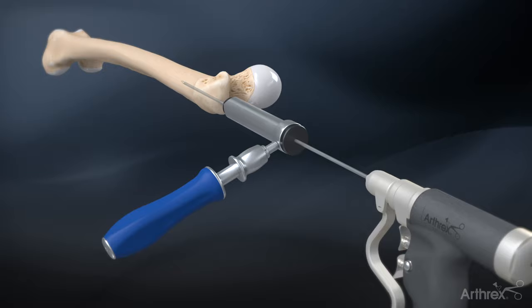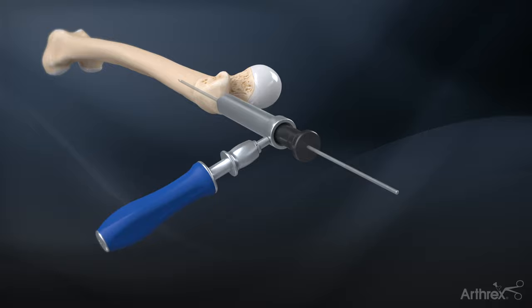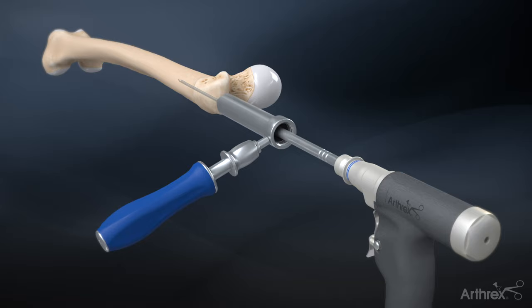Insert the 3.2 mm guide pin through the soft tissue protector by aiming towards the central axis of the femoral shaft. Remove the black pin guide and ream over the guide pin with the 13.5 mm cannulated entry reamer.